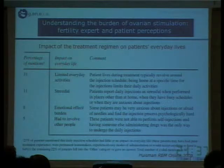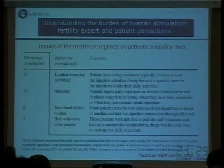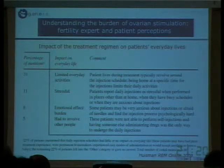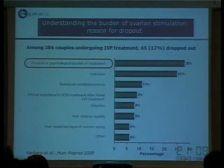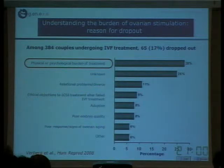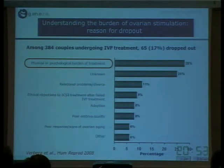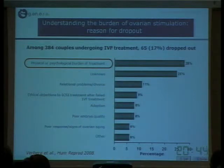We all know that for our patients, the stimulation protocols limit everyday activities. They are very stressful and burdened with regard to emotional effects, and they involve many people around them. It is a very stressful condition during 15 to 25 days of controlled ovarian stimulation. When we look at the reasons for dropout in our centers, the physical and psychological burden of treatment is the most important reason for dropout. The higher the dropout, the lower the cumulative pregnancy rate — if patients do not dropout, we will end up with more pregnancies.